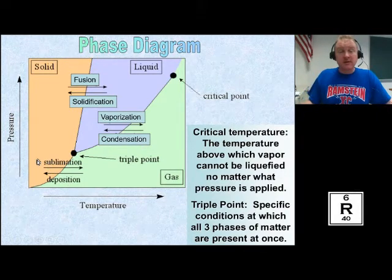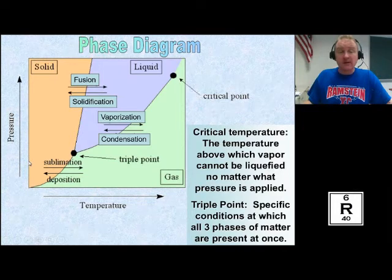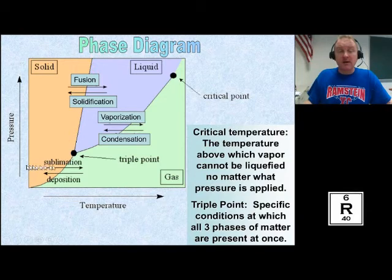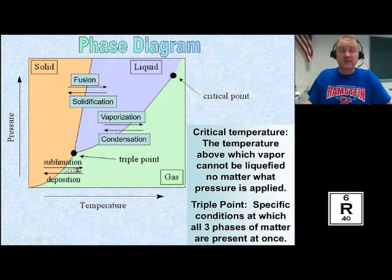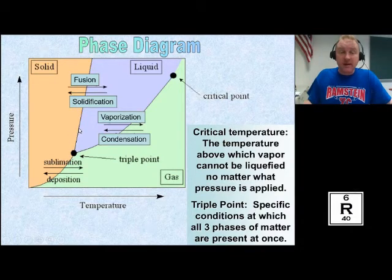Sometimes things can go directly from a solid to a gas, skipping the liquid phase entirely, if the pressure is low enough. Carbon dioxide's phase diagram is a good example — at our atmospheric pressure under normal conditions, dry ice is solid, and when it heats up, it does not go into the liquid stage. At atmospheric pressure, it goes from solid right to gas. That's called sublimation. And if you go the other way — from a gas right to a solid — that's called deposition.